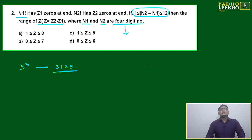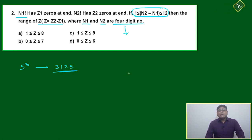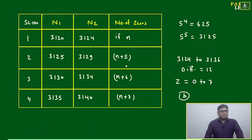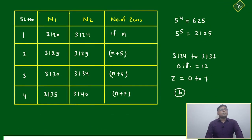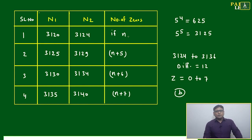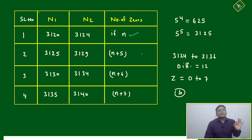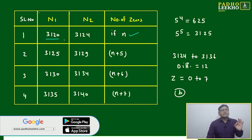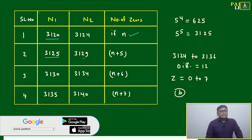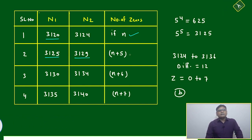The difference between the two numbers cannot go beyond 12, so we have multiple options and must decide the range of z2 minus z1. For example, take n1 = 3120 and n2 = 3124, or n1 = 3125 and n2 = 3129. Do not start calculating the actual number of zeros — you will get trapped. Just suppose the number of zeros at n1 is n; we are not interested in the exact value.